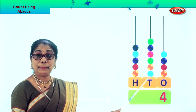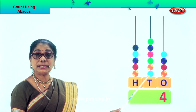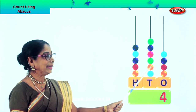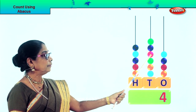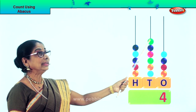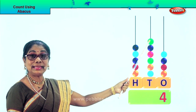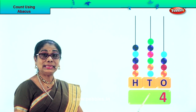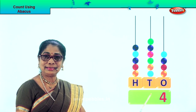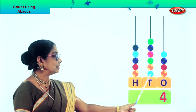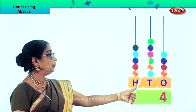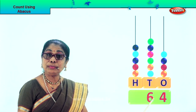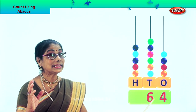Now we go to the 10s place — we'll count the beads in 10s: 10, 20, 30, 40, 50, 60. There are 6 beads — that is 60. We write number 6 here: 1, 2, 3, 4, 5, 6. So we write number 6 in the 10s place — that is 60.